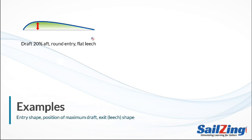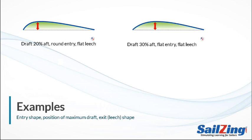This sail has the maximum draft at 20% — we would say this sail has draft forward, since the target for most conditions is more towards the center of the cord line. The sail also has a rounded entry and a flat leech. The sail on the upper right has the maximum draft at 30% and also has a flatter entry, though the difference from the picture on the left is subtle. It also has a flat leech.